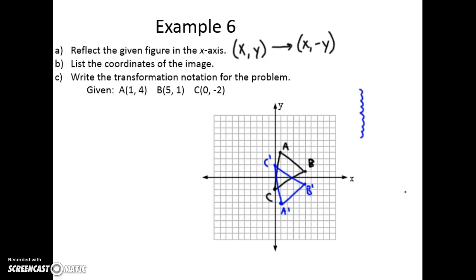My transformation notation: the coordinates change so that we just change the sign of y. So a prime is (1, -4), b prime is (5, -1), and c prime is (0, 2).